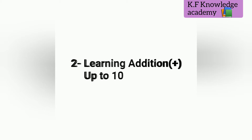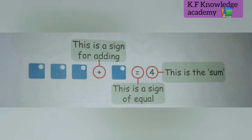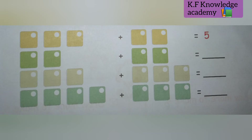Today we will see chapter number two, that is learning addition — plus — up to 10. We can see there are three boxes and a plus sign, which is the sign for adding, means addition sign. Again there is one box, so it means three boxes plus one box. Three plus one is equal to four — this is the equal sign. The sum of three plus one is equal to four. In this chapter we will learn about addition, means plus.